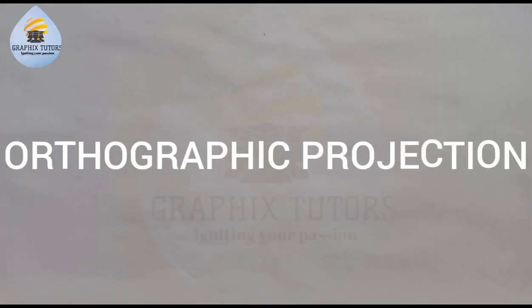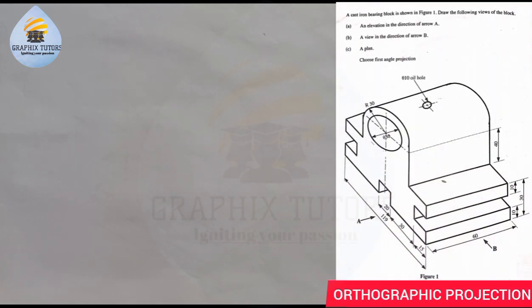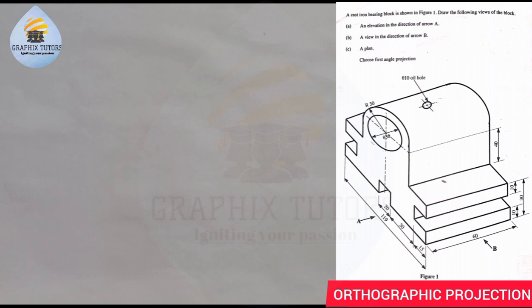Good everyone, my name is Graphics. If you look at the right-hand side of the screen, you see a question. The question says that a cast iron bearing block is shown in Figure 1. Draw the following views of the block: A — an elevation in the direction of arrow A; B — a view in the direction of arrow B; C — the plan. Choose first angle projection.